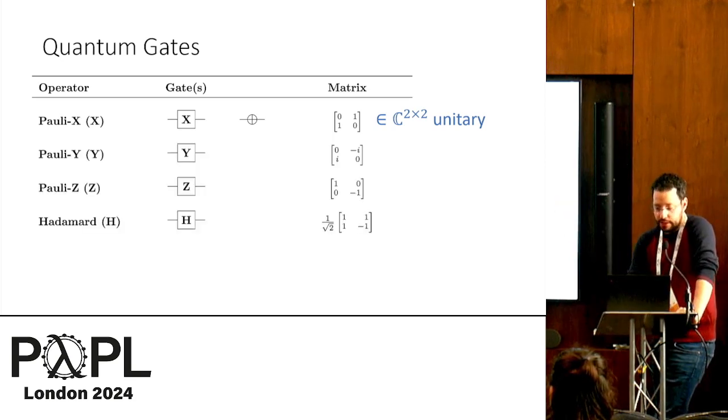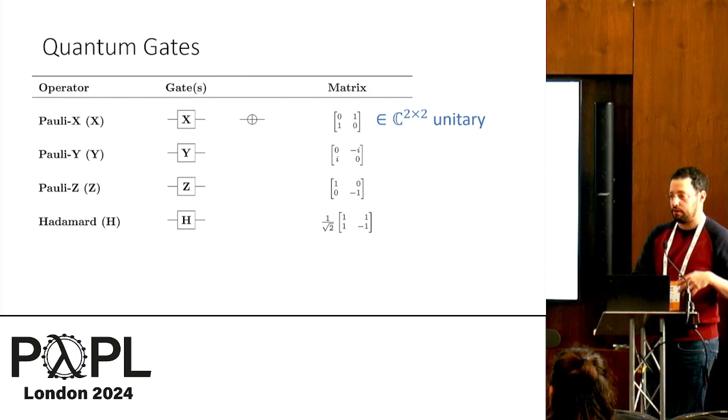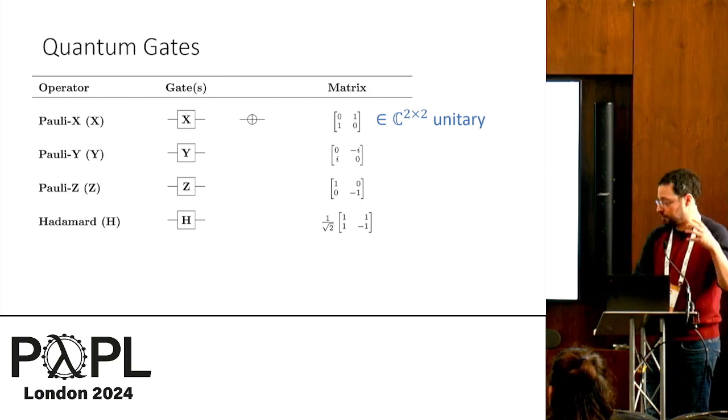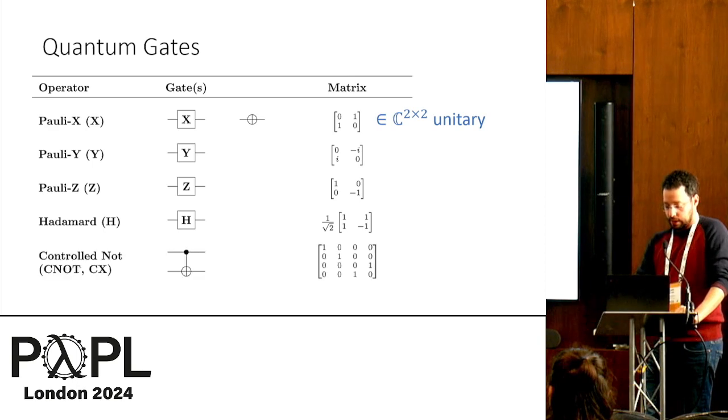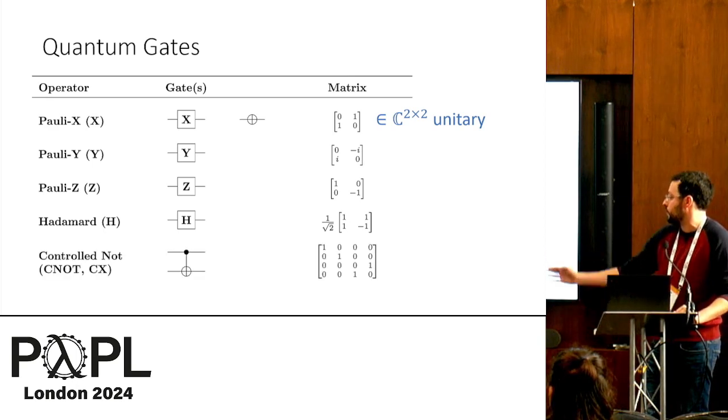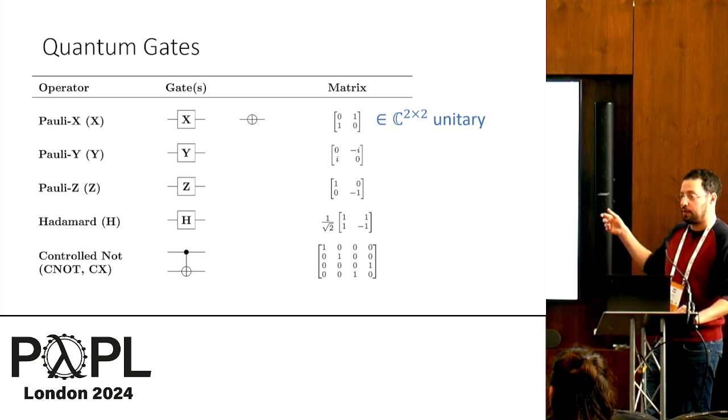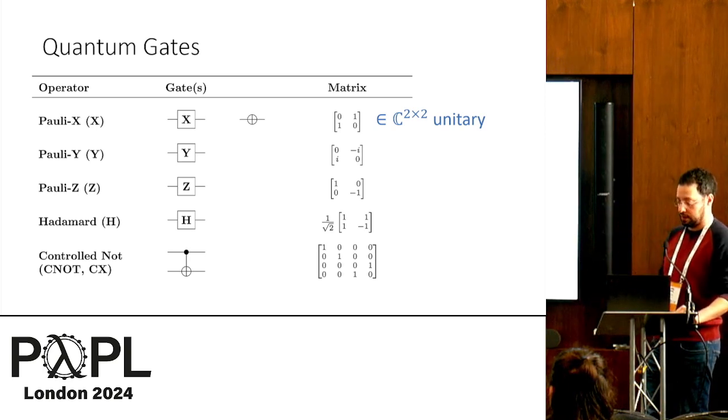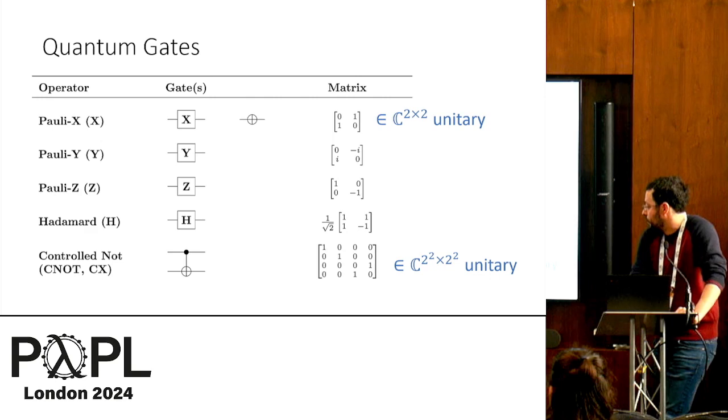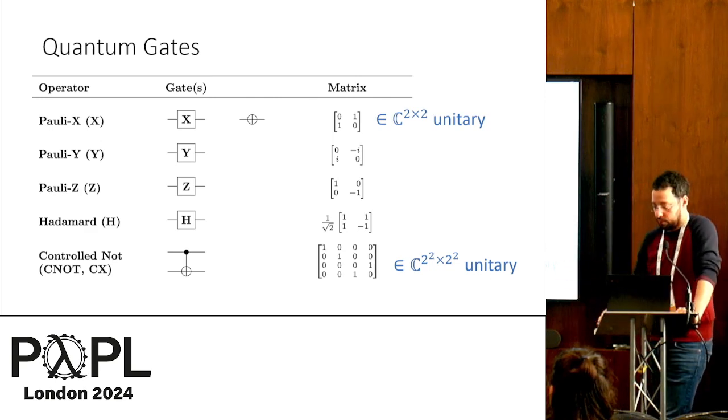We also have some single qubit gates that are, that don't have a classical analog, they just change the superposition between the two states, and we also have some two qubit gates, for example, a controlled NOT, which is like the classical XOR, which flips one, the value of one bit according to the value of another bit, and its semantics is going to be given by a four by four unitary matrix.